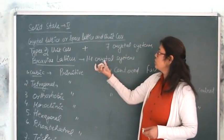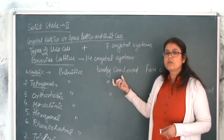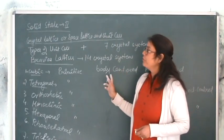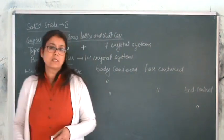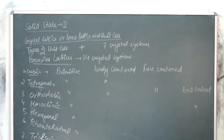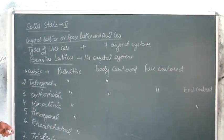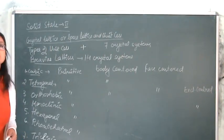that is why it is known as your 14 crystal systems. So this is the end of your second topic of solid state, that is your crystal lattice, space lattice and kinds of unit cells.